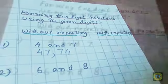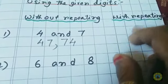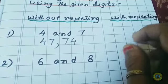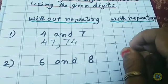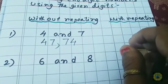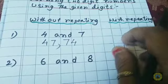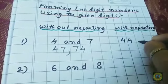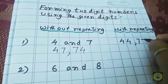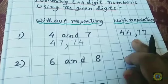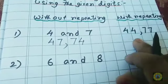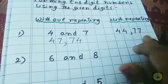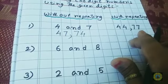Now, with repeating. We can form two more numbers by placing the same digits in both the ones and the tens places. That is 44 and 77. So we get the numbers 44 and 77. This is the with-repeating case.